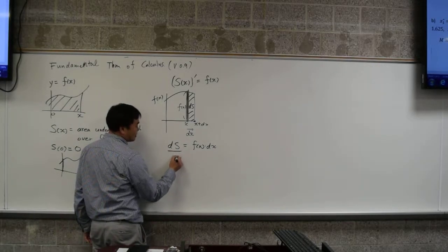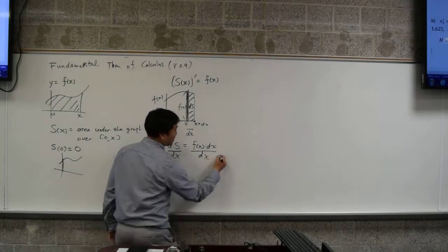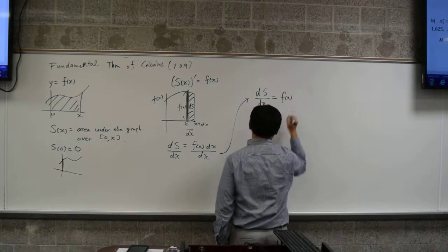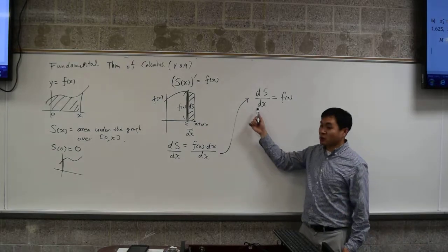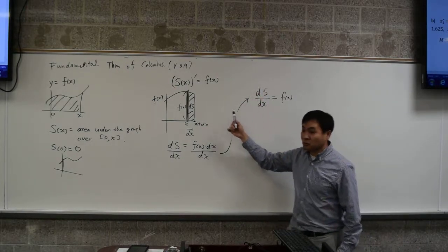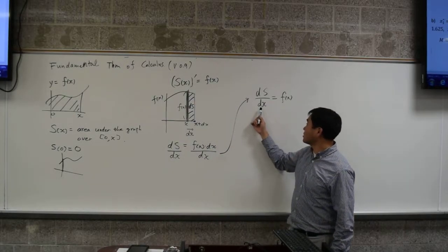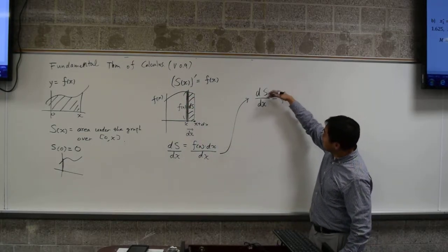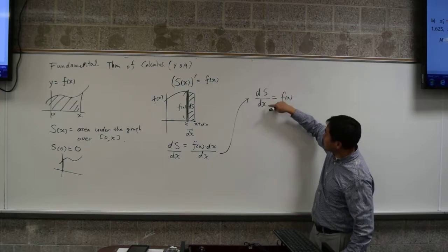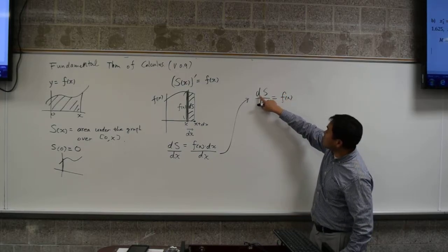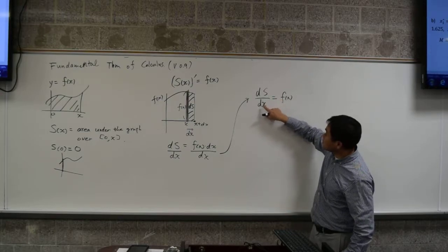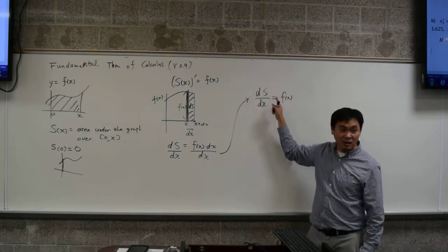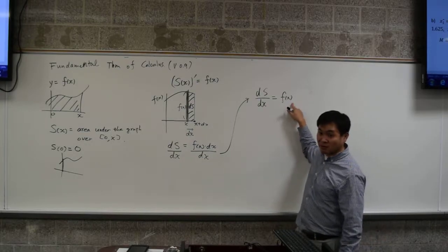So, we have ds equal to f of x times dx. Then, you divide both sides by dx, and guess what you get? You get ds over dx equals to f of x. And I hope everyone knows that this is just another symbol for the derivative. It's Leibniz notation for the derivative. This is the Newton's notation for the derivative.